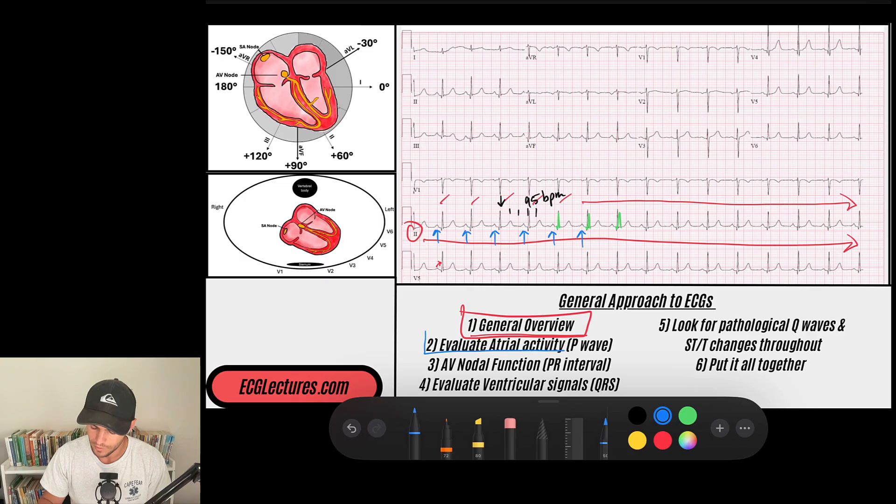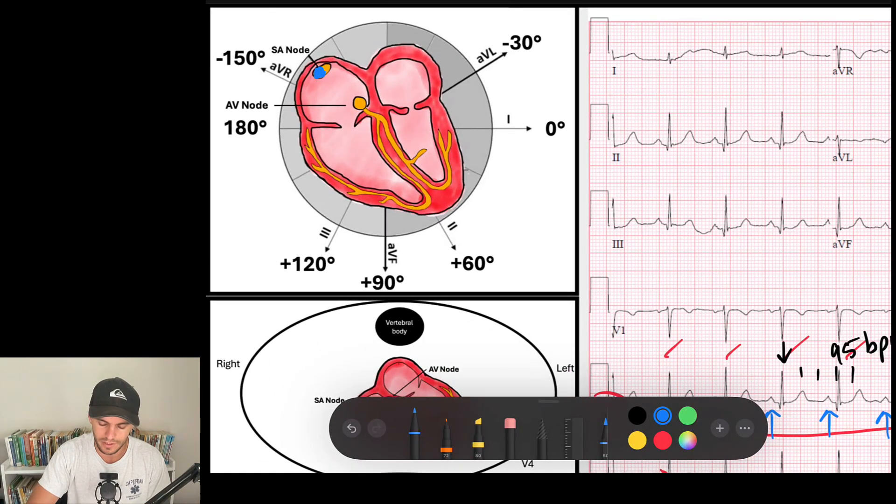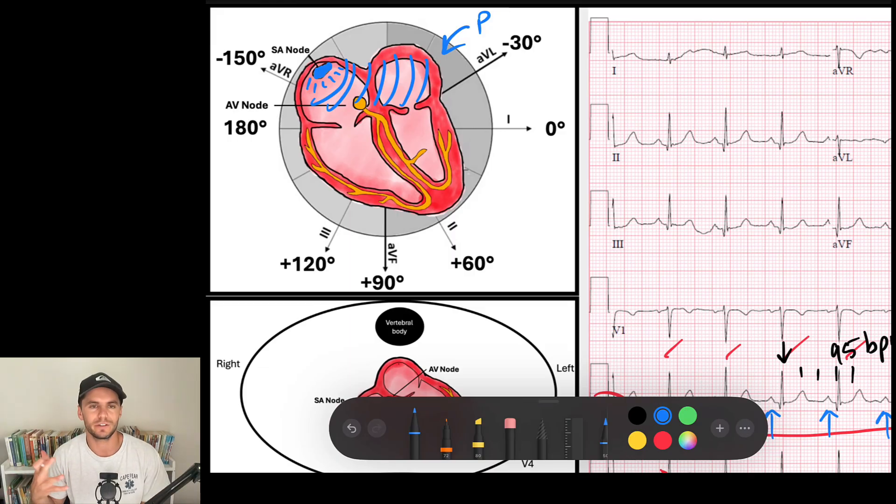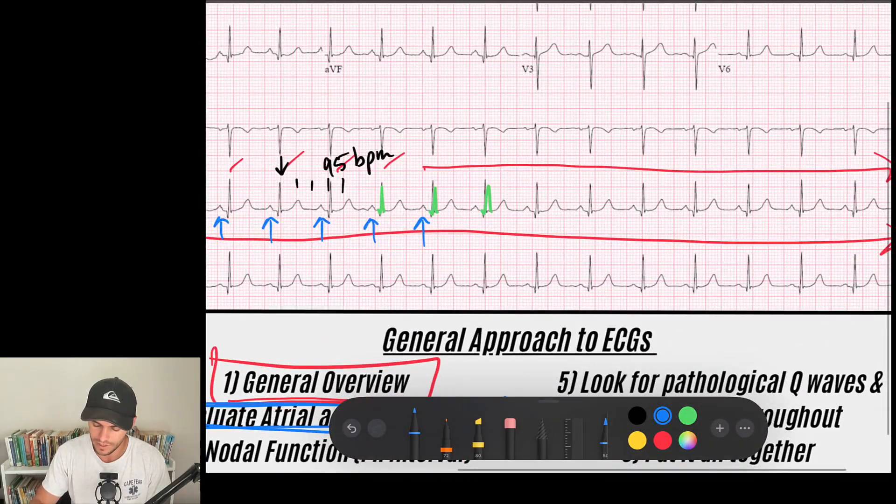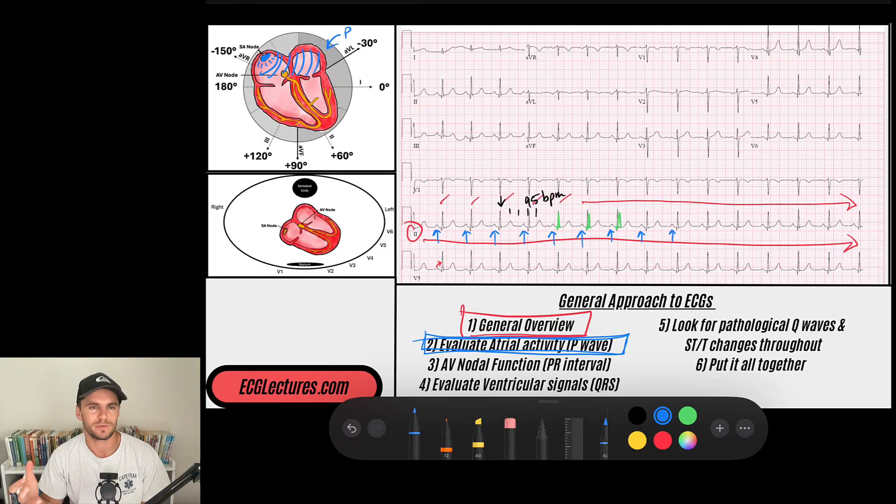Step number two is evaluate the atrial activity. The theme of today's lecture is we're just going to use the cardiac conduction system. If I come up here to my heart, we see my sinus node is right here. We know that the sinus node, when it drives the rhythm, it's going to fire off and generate atrial forces. That's atrial depolarization. Remember, that's our P waves. So the first thing that we're going to do naturally is let's evaluate the first part of ventricular, or excuse me, cardiac depolarization, which is our P waves. As we said before, we said that there are P waves driving this rhythm.